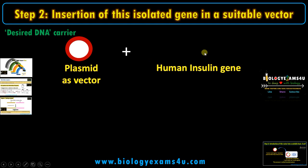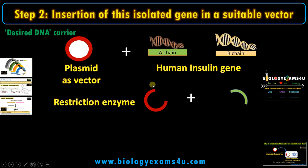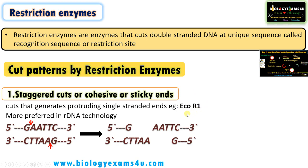Now let's take human insulin gene as an example. We make a cut in the vector using a restriction enzyme. Restriction enzymes are enzymes that cut double-stranded DNA molecules at unique sites called restriction sites. Take EcoRI, the restriction enzyme from E. coli — the restriction site is GAATTC. Whenever GAATTC is present in a sequence, this enzyme makes a cut and yields a sticky end: there are AATT single-stranded unpaired regions. A cut that generates single-stranded unpaired ends is called a sticky end.